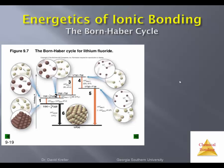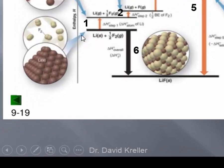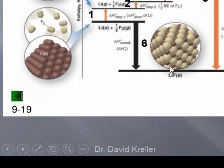Here we're looking at a Born-Haber Cycle that describes the formation of lithium fluoride. This Born-Haber Cycle looks fairly involved because it has some extra information — graphics have been provided to depict everything happening within the chemical system as you go through various processes. The overall process we're interested in is the formation of the ionic compound lithium fluoride, starting from the elements. The overall formation is exothermic — it releases energy — and is depicted here as step six.